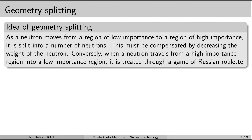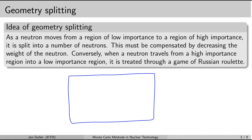Let me explain the basic idea of the geometry splitting technique using a simple system with a small detector in the corner. I'll partition the system into three parts and assign an importance value to each. The part furthest from the detector gets the smallest importance — let's assign it the value 1. The middle segment gets a higher importance, say 3. And the last segment, closest to the detector, is the most important, so let's assign it importance 9.